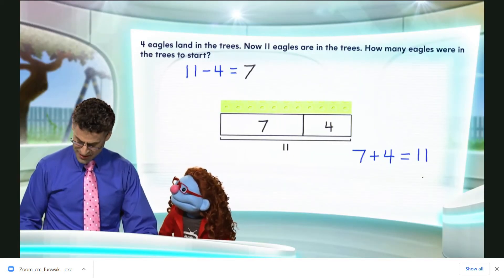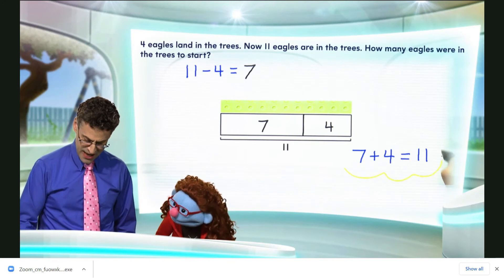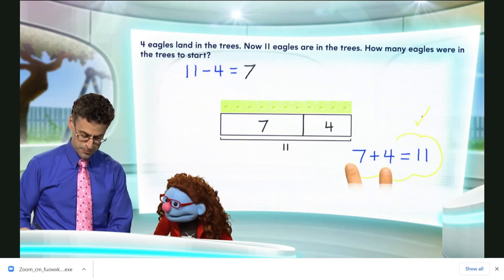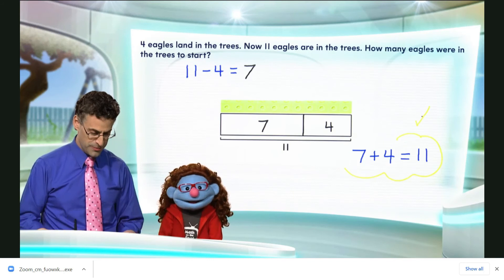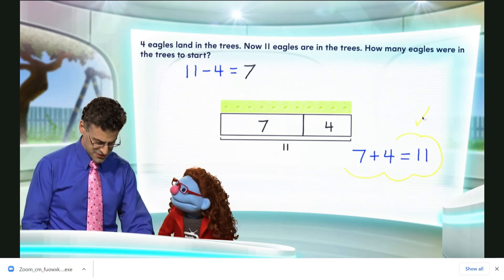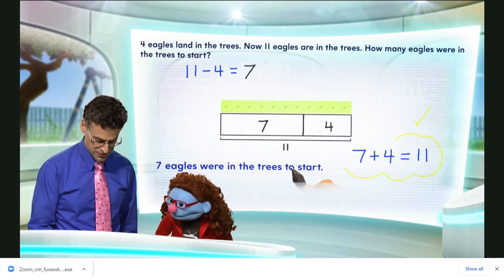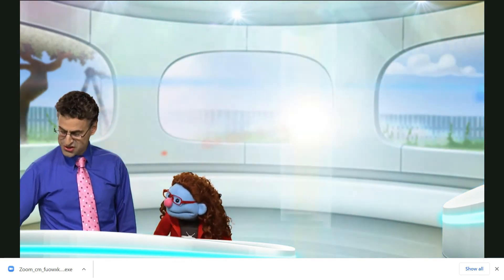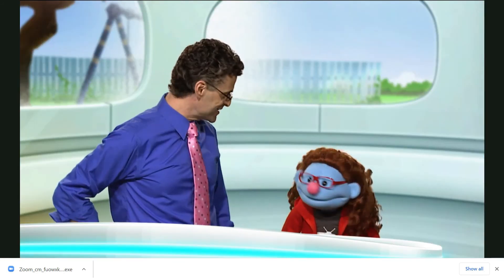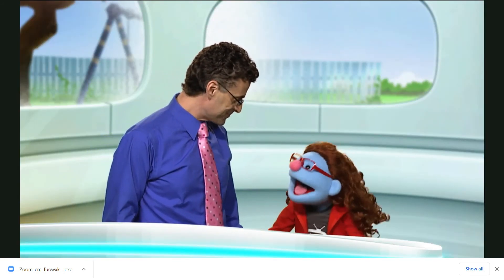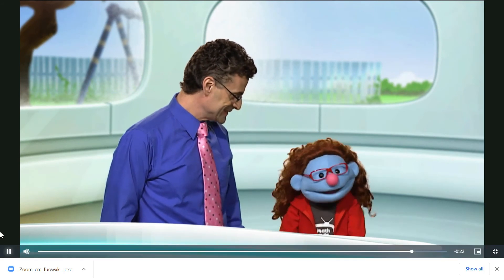Brilliant, Jeannie, as always. And so we see that this is a little check to see that if we add the two parts, we get the whole, the entirety of all of them. And so in this case, we see the answer is seven eagles were in the trees to start with, and there is the answer. Wow, there were seven eagles, but in total there were eleven.